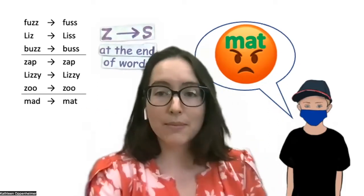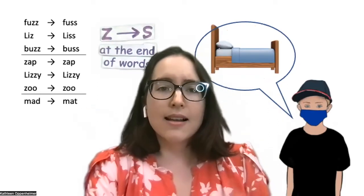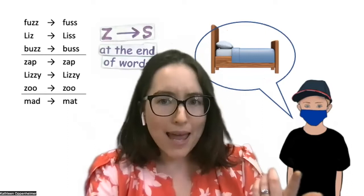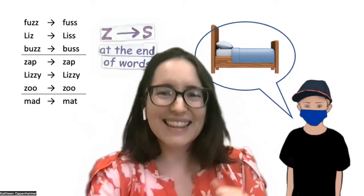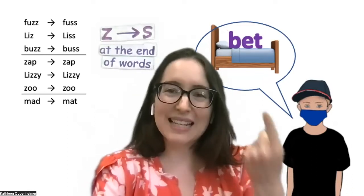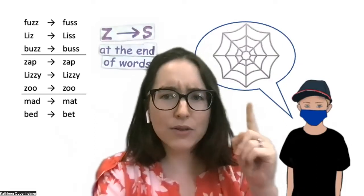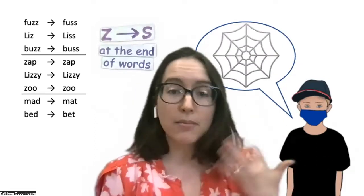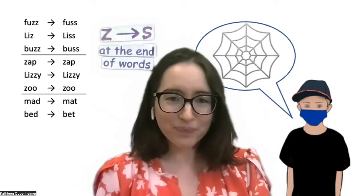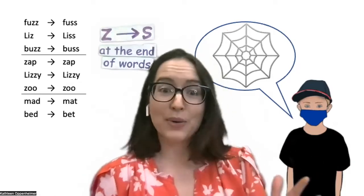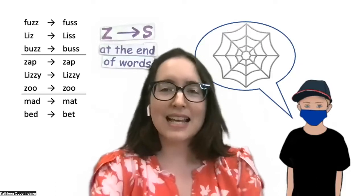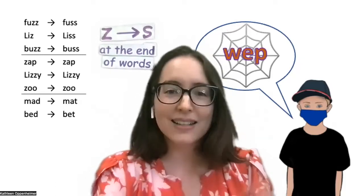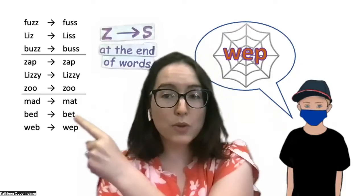So "mad" becomes "mad." What about "bed"? How do you think he'll pronounce "bed"? And they usually guess "bet." So we add that to the list. How do you think he'll pronounce "web"? And here we usually get a number of different guesses, or some students just say they don't know — they want to wait and find out what Billy says. And Billy says "wep" instead of "web."